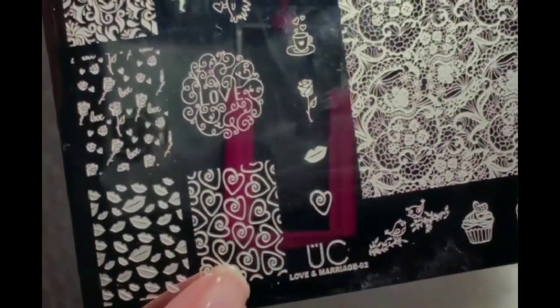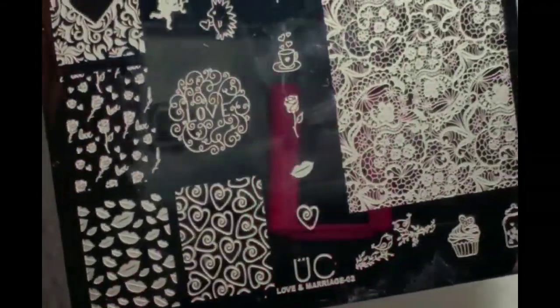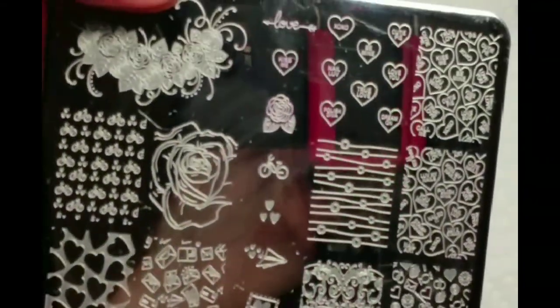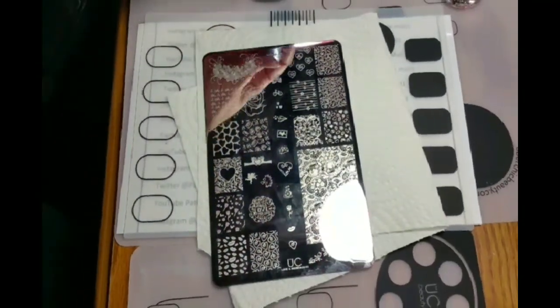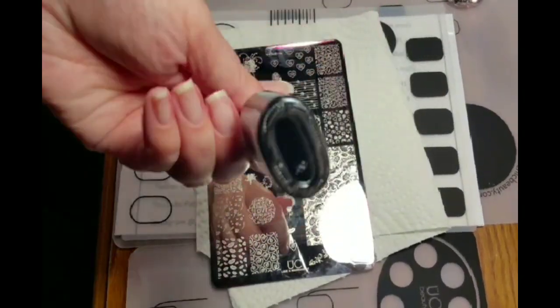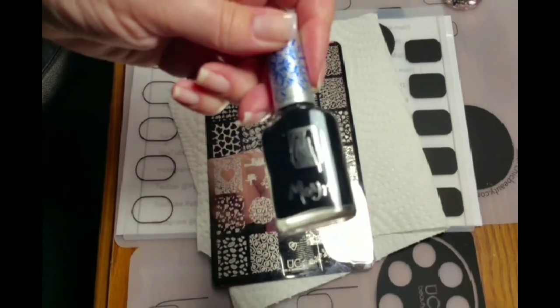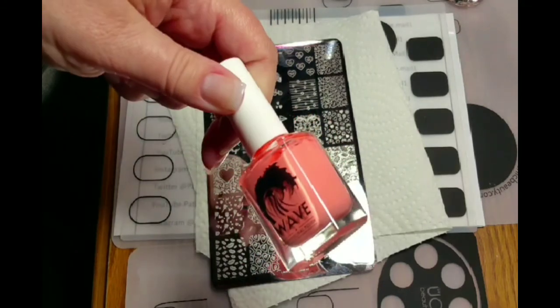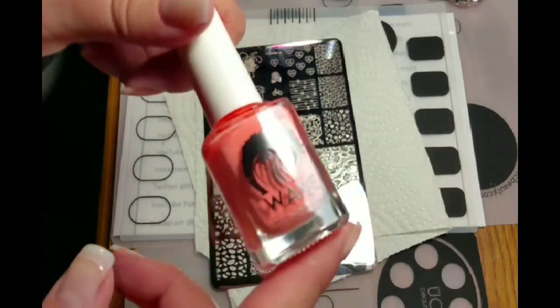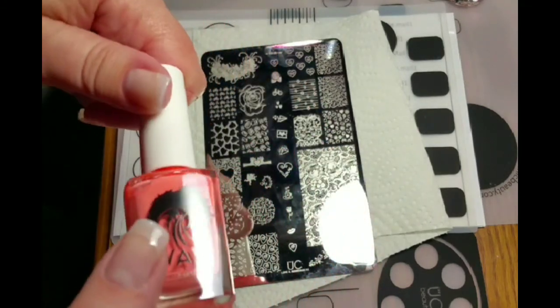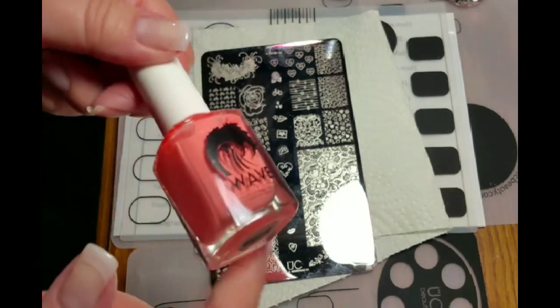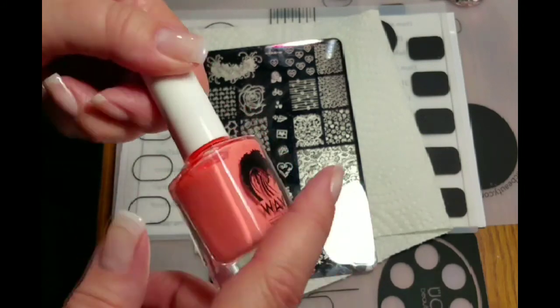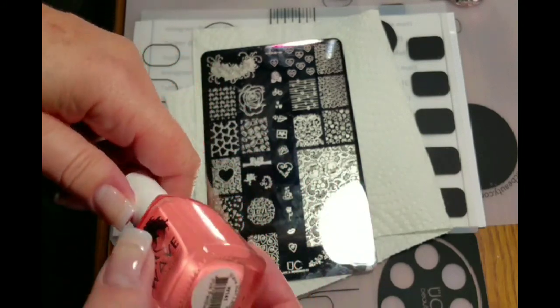For the flowers, I'm going to use Uber Chic Beauty's Love and Marriage 2 Plate. And I'm going to use this little flower right here. And then I'm going to use my Moira Black Stamping Polish. And I'm going to color in the flowers with a variety of the lacquers from my Wave Gel Matching Set. So as I use them, I'll tell you what colors I'm going to use.